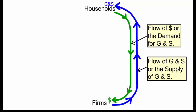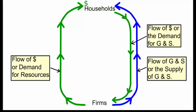The other side of the circular flow is what we call the resource market. The firms demand the resources of land, labor, capital, and entrepreneurship skills from the households, and they pay for those resources. This is called the flow of money or the demand for the resources.